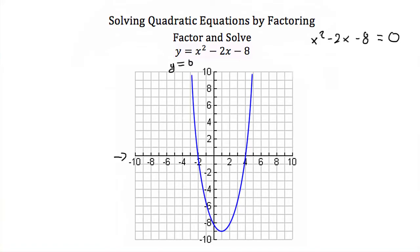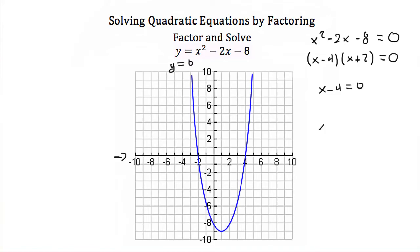Now I can factor x squared minus 2x minus 8 into x and x, and then a minus 4 and a plus 2. So here again I have two binomials multiplied together, and that's set equal to zero. So I can treat these separately. I can set x minus 4 equal to zero, and x plus 2 equal to zero.